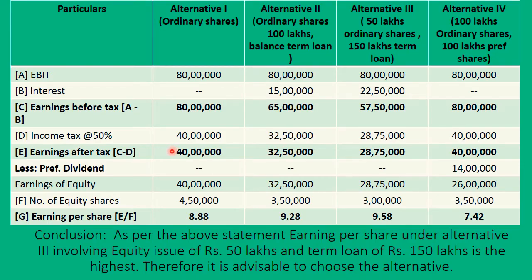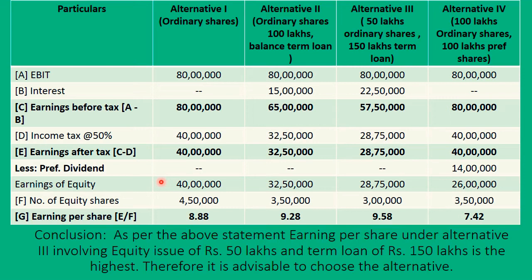From earnings after tax, the next step is to deduct the preference dividend. In the first three alternatives there is no preference capital, so preference dividend is nil for those. Only in the fourth alternative do we have 100 lakhs of preference shares at 14% dividend, giving a preference dividend of 14 lakhs. Deducting 14 lakhs from 40 lakhs leaves 26 lakhs available for equity shareholders. The remaining balances in the other alternatives stay the same, as those amounts are available for equity shareholders.